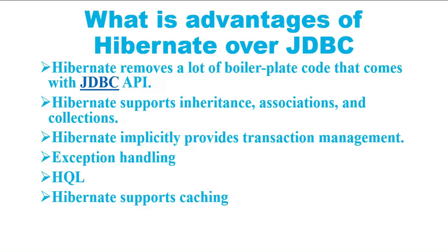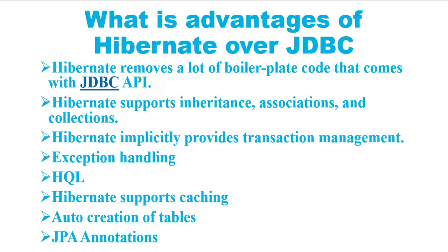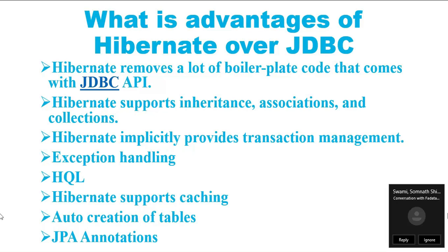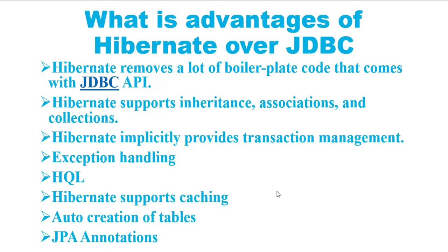Hibernate supports caching which improves performance, whereas JDBC queries are not cached, so performance is lower. Hibernate provides the hbm2ddl property through which we can create database tables automatically, whereas in JDBC tables must be manually created in the database. Hibernate also supports JDBC-like connections as well as JNDI DataSource for connection pooling — an important feature in enterprise applications that is completely missing in JDBC API. Hibernate supports JPA annotations so the code is implementation-independent and easily replaceable with other ORM tools, whereas JDBC code is very tightly coupled with the application.